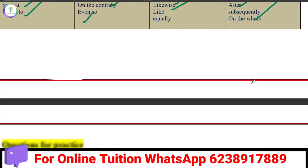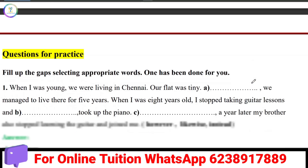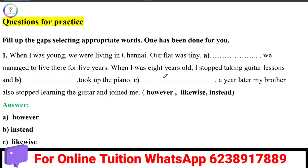We will learn two examples. When I was young, we were living in Chennai. Our flat was a tiny flat. We managed to live there for five years. So, if we were young, we managed to live there for five years.